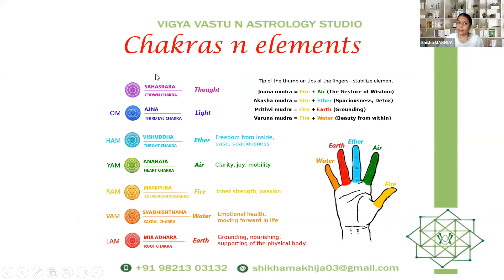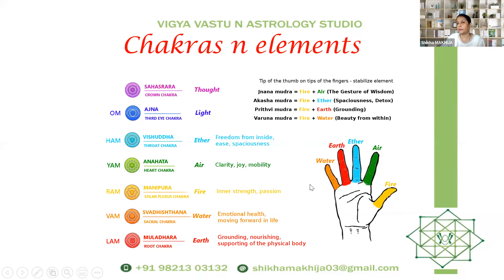These are the various chakras we have already covered in two previous sessions — you can follow the links provided. Muladhara chakra is earth, Swadhishthana chakra is water, Manipura is fire, Anahata is air, Vishuddhi is ether, Ajna chakra is light. Whenever we are doing certain mudras, we are combining fingers because each finger also has a tattwa. If you combine fire and air — that gives wisdom.